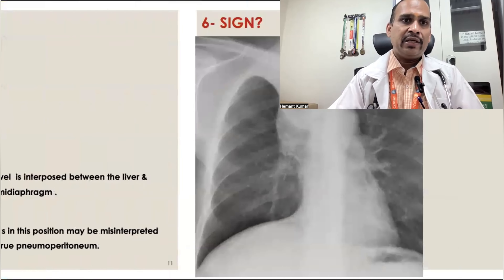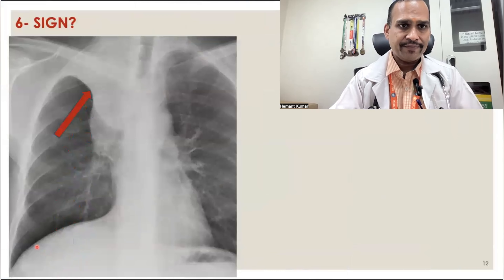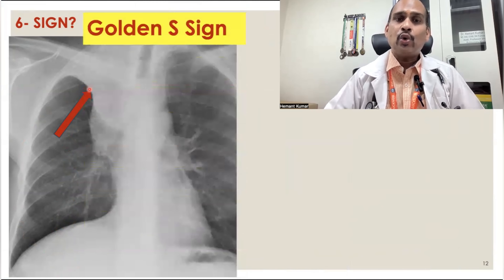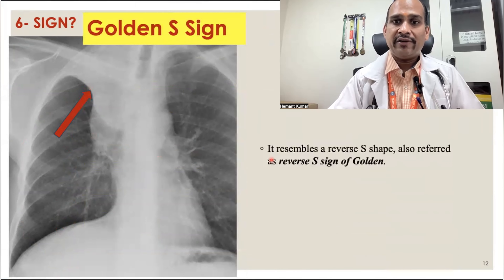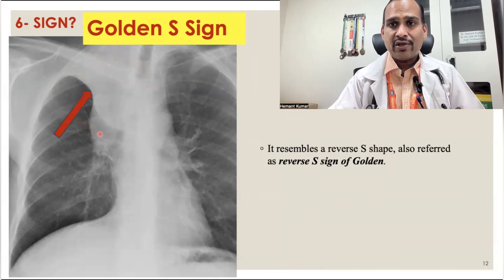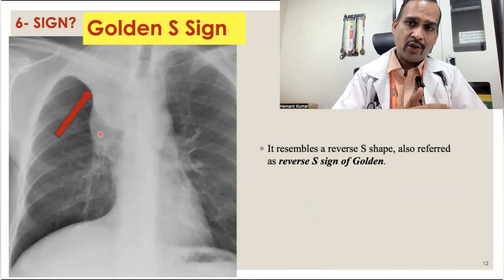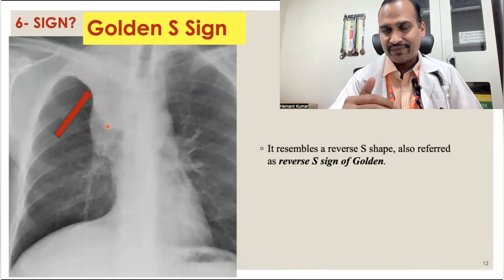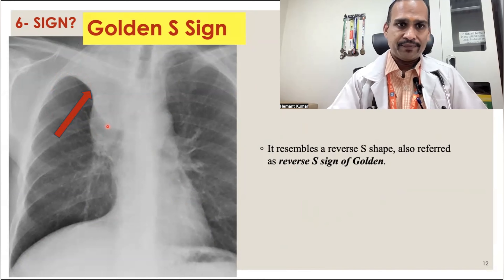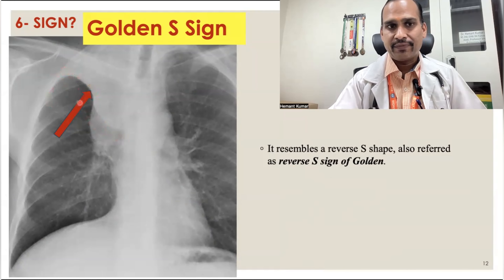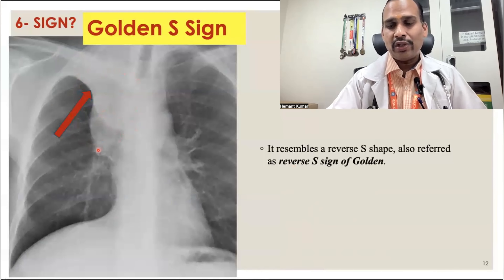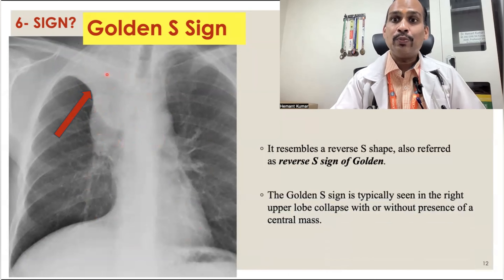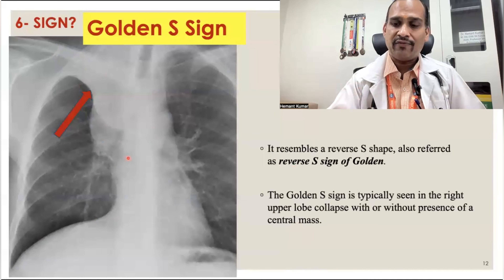Sign 6 is the Golden S sign, also called the reverse S sign of Golden. It forms when a mass obstructs the right upper lobe, causing right upper lobe collapse. Due to the collapse, the minor fissure shifts into an S-shape — an inverted S. Whenever a mass produces this reverse S shape, it is called the Golden S sign. The significance is that it indicates a mass causing upper lobe collapse.